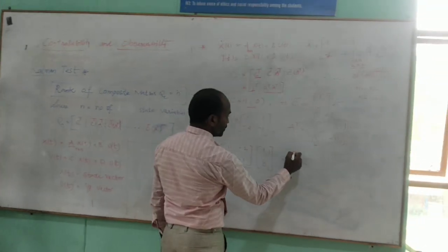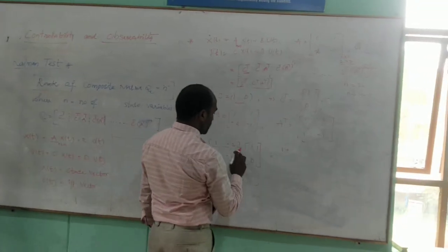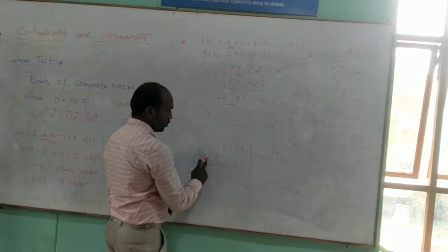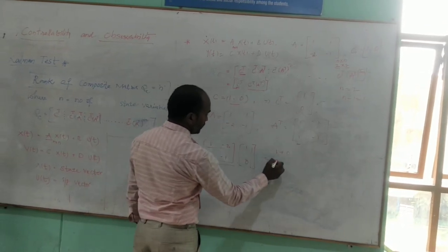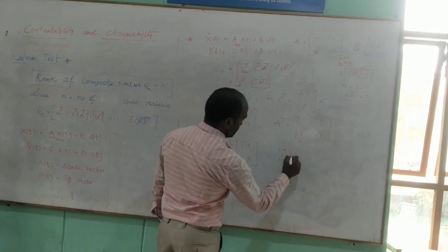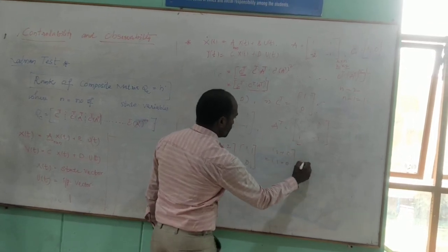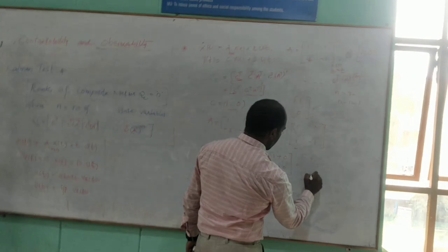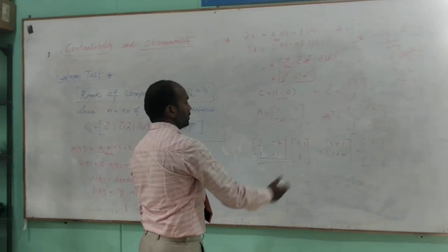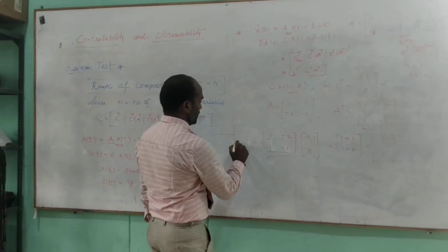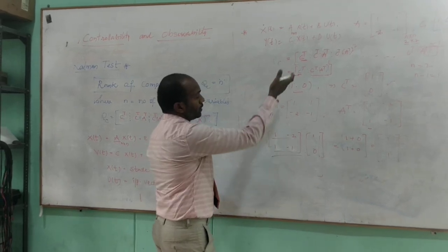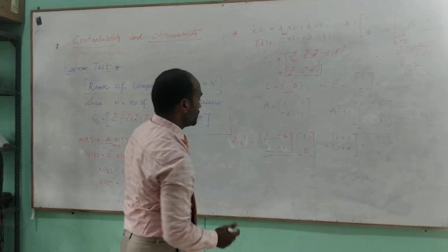Computing C-transpose times A-transpose: row [1, 0] times A-transpose gives 1×1 + 0×1 = 1 and 1×(-2) + 0×0 = ... the result is [1; 1]. So C-transpose is [1; 0] and C-transpose times A-transpose is [1; 1]. The composite matrix Qo is therefore [1, 1; 0, 1]. Now determining the rank, taking the 2×2 determinant: 1×1 − 0×1 = 1, which is not equal to zero.